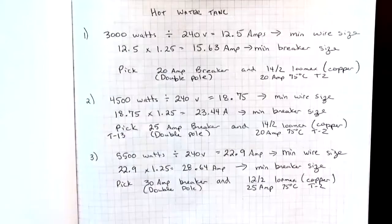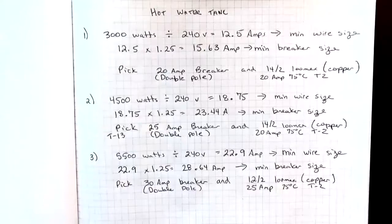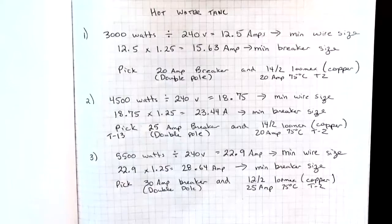Table 13 is our guide as to what the standard size breakers are. If you cannot get a 25 amp breaker in the particular brand that your panel is, then you could go to a 30 amp breaker. Again, this is a double pole breaker because of the 240 volts.